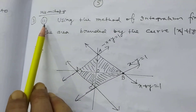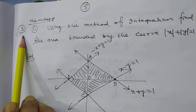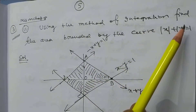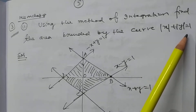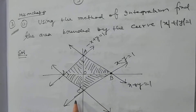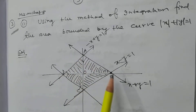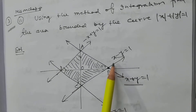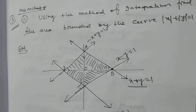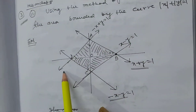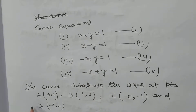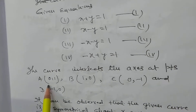Now I want to discuss problem number 11 of the miscellaneous exercise, also problem number 3 of this study material. Using the method of integration, find the area bounded by the curve |x| + |y| = 1. The curve forms segments AB, BC, CD, DA, where AB represents x + y = 1, BC represents x − y = 1, CD represents x − y = 1, and AD represents −x + y = 1. We find the points of intersection of each line with the x and y axes.